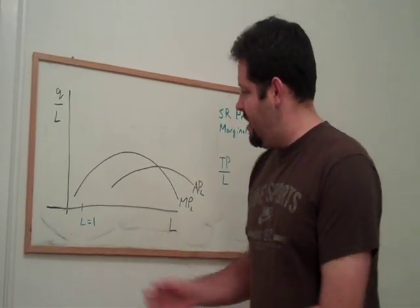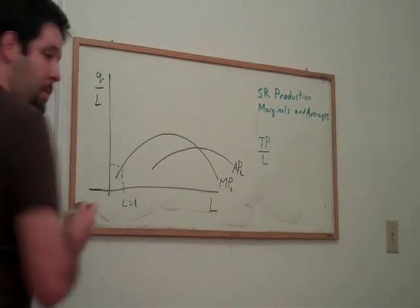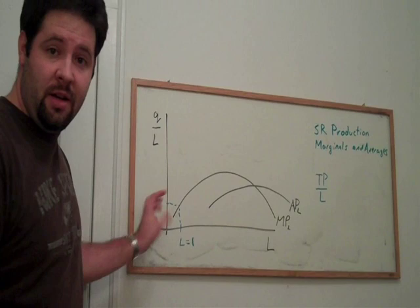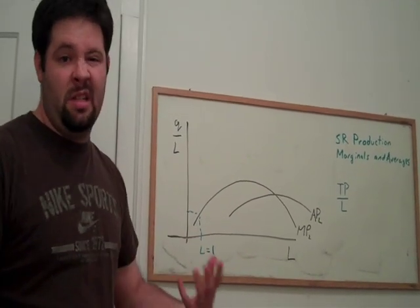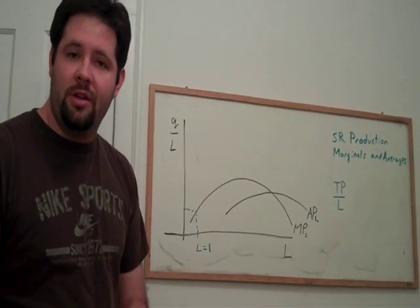So, she can actually contribute this much to the bottom line of the company. She can produce that much quantity. That's what this means. For that last unit of labor, this is the first person, this is how much the worker can actually produce.